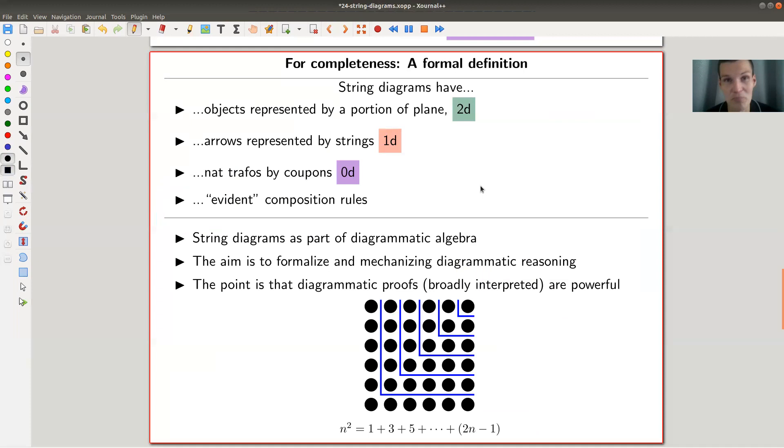So formally, I don't want to write down what a formal string diagram is, but basically, you have objects represented by portions of a plane, arrows represented by strings, natural transformations represented by coupons, and the evident,